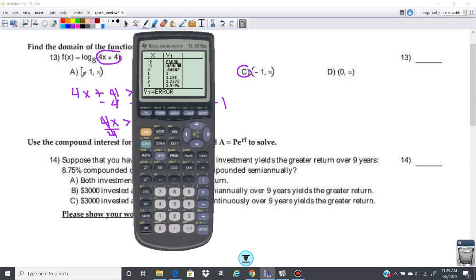Okay, so that is why we can't use the brackets here, we're going to use the parentheses, because we're going to approach negative 1, but we're not going to actually touch it there. So that's why we're choosing C, or we're doing the 4x plus 4 is greater than 0.